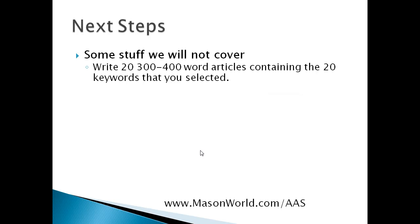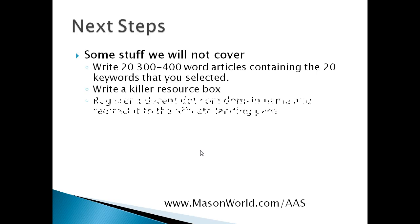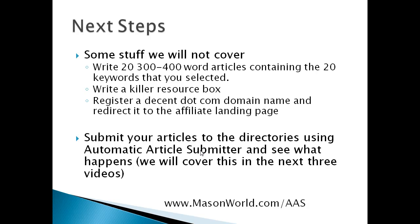In the next steps, we need to write 20 articles of 300 to 400 words each for submission to the directories. I'm not going to teach you how to write articles, but the bonus I provide if you buy automatic article submitter covers some of that. It also covers how to write a killer resource box, which is very important because we need people to click through to our link. You need to register a domain — we've already got one: freenaturalcoloncleanse.com. Then we'll submit our articles in the next video using automatic article submitter. It'll actually take about three videos to get that done, going one baby step at a time.